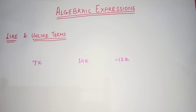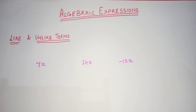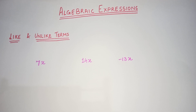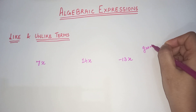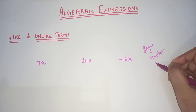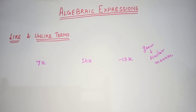I have written 3 terms and now we will discuss whether these are like terms or unlike terms. The terms are 7x, 14x, and negative 13x. Before starting, I would like to tell you that like terms are the terms which behave in a similar manner — that is, they grow in a similar manner. So let's see how these 3 terms are growing with the values.